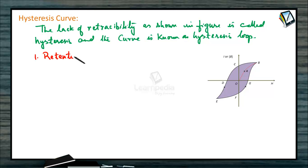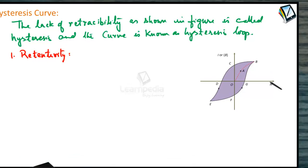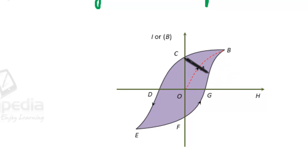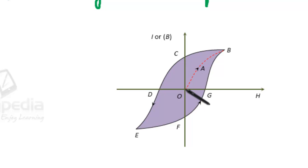First, retentivity. When H is reduced, I reduces but does not become equal to zero. When H is zero, I does not reduce to zero. The value OC of magnetization when H is equal to zero is called the residual magnetism or retentivity. That means OC is the retentivity here.